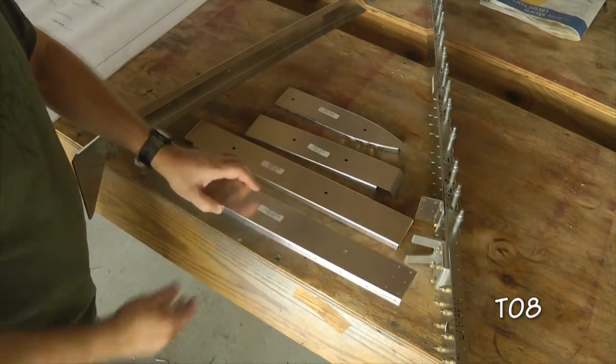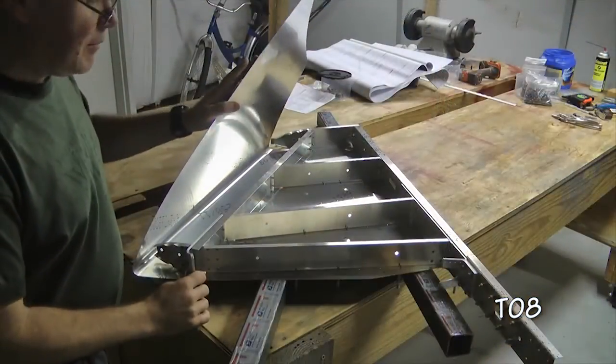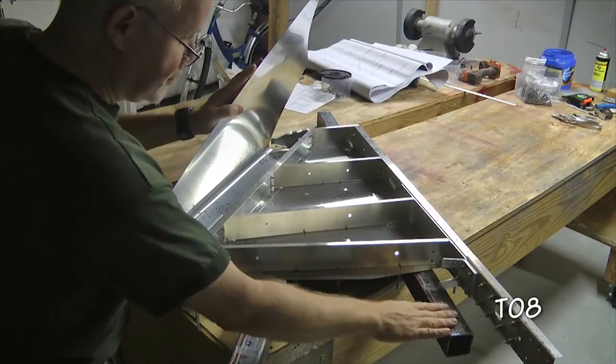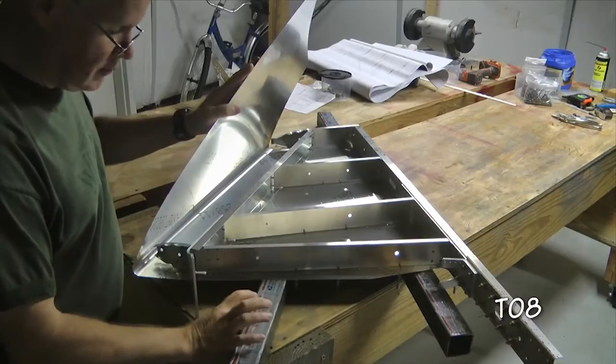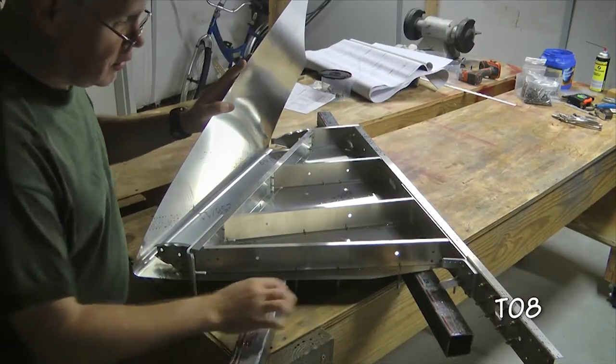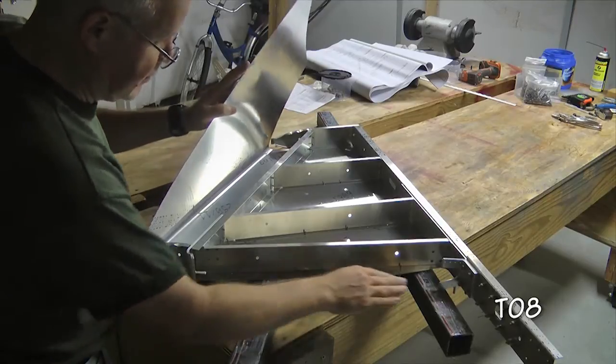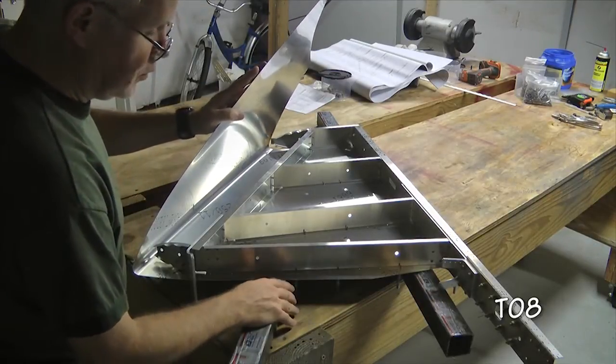This is T1001. Turn the stabilizer over and place it on top of my supports. Again, anything that is at least two inches tall and allows the clecos to not touch the table underneath will do just fine.